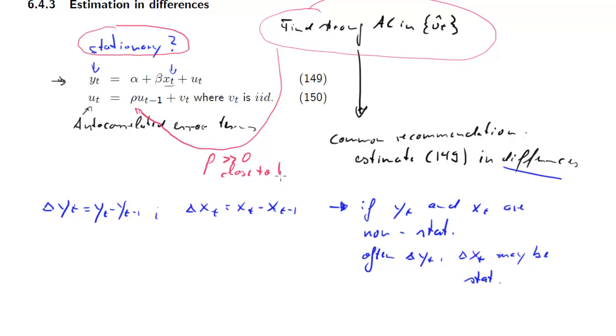So let us firstly do a little bit algebra. What we're now going to do is reconstruct a model for delta yt from our model 149 and 150. And then we're going to ask, seeing how this new model relates to 149, when does it make sense? Let me just write that down.